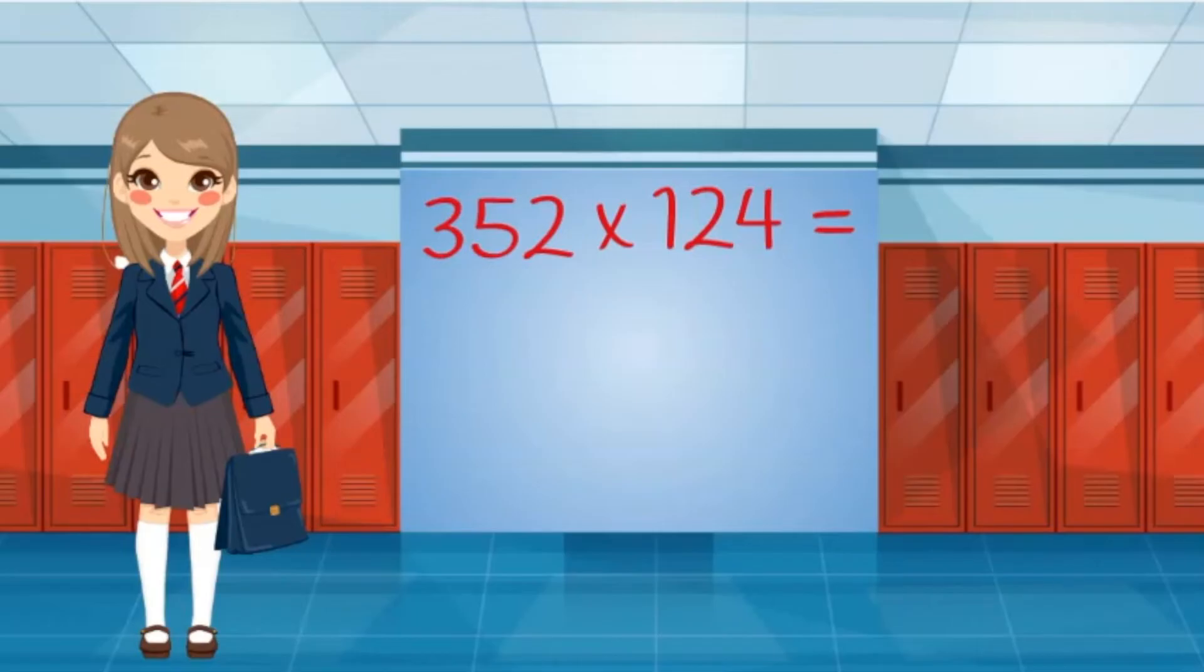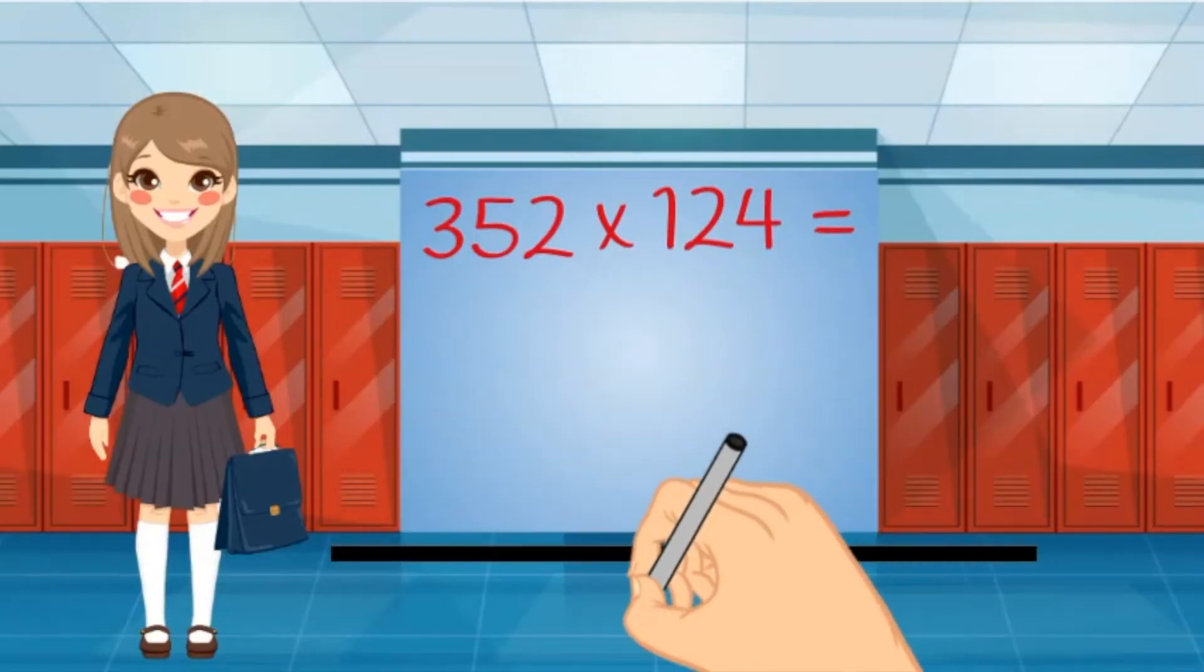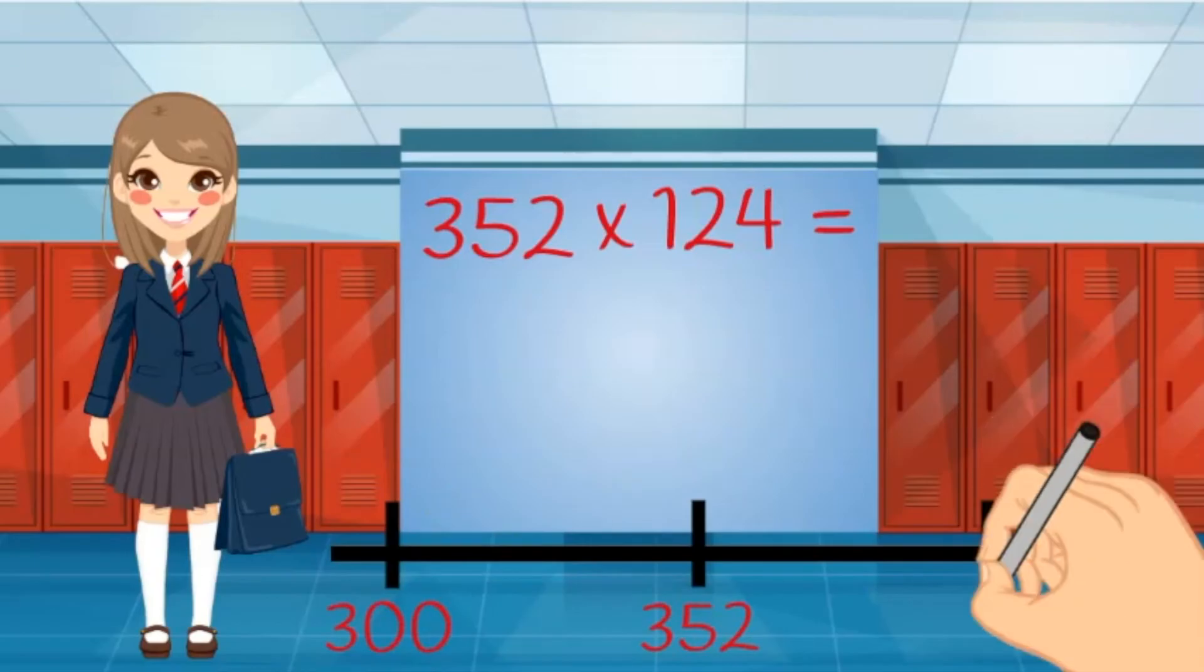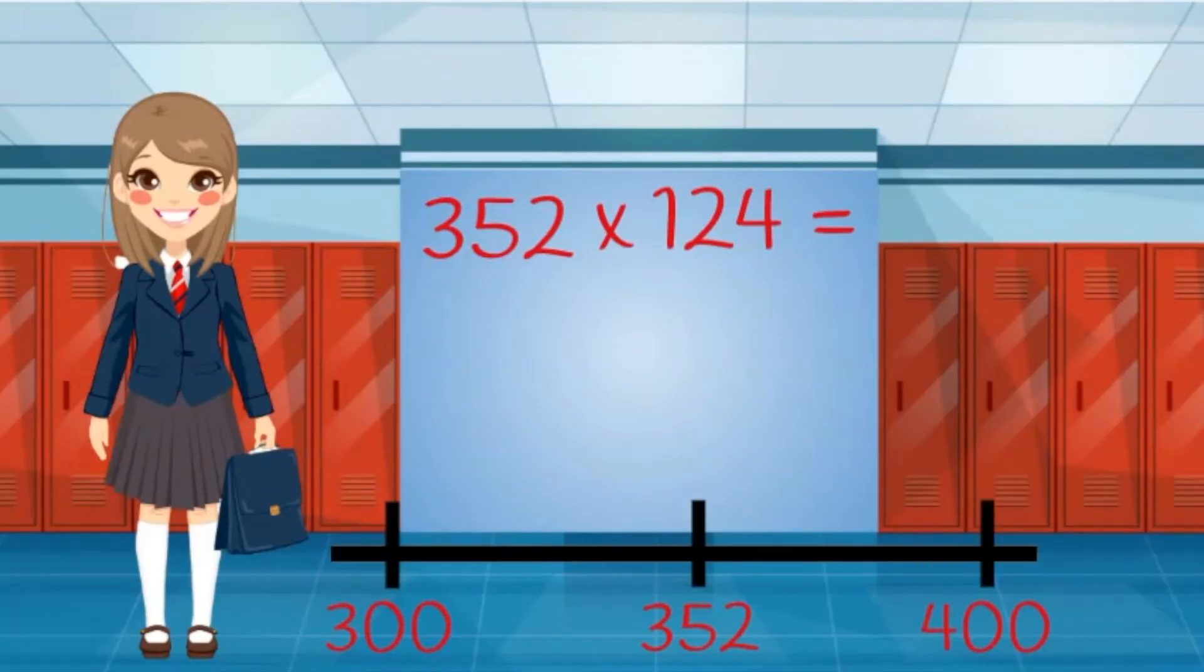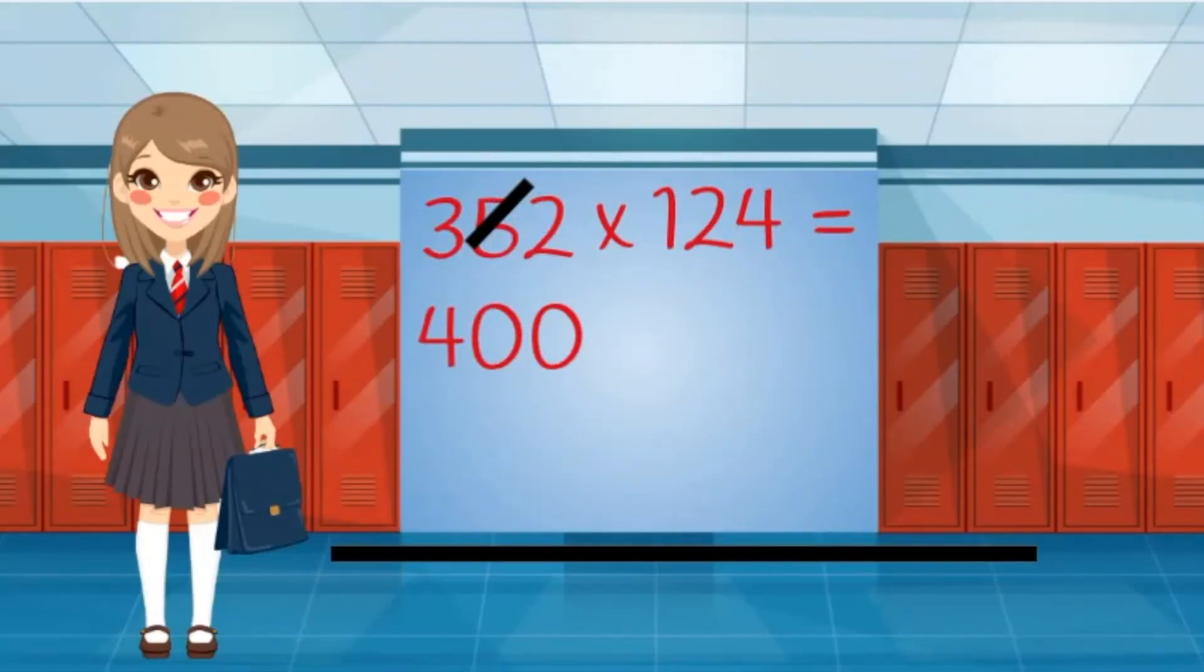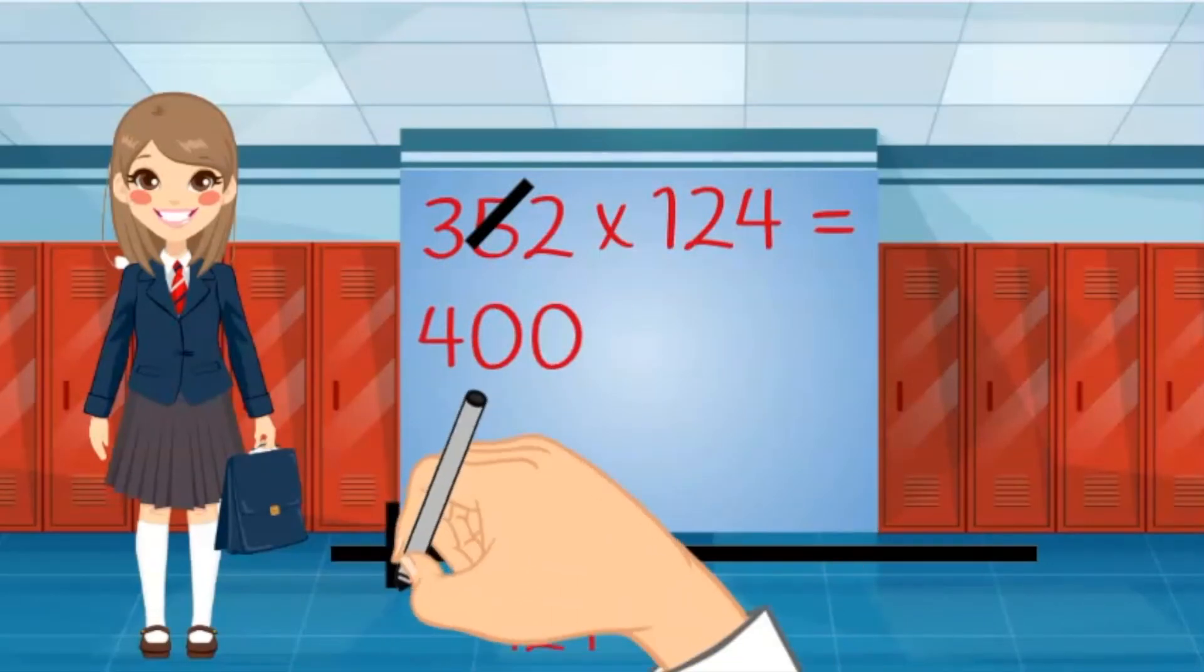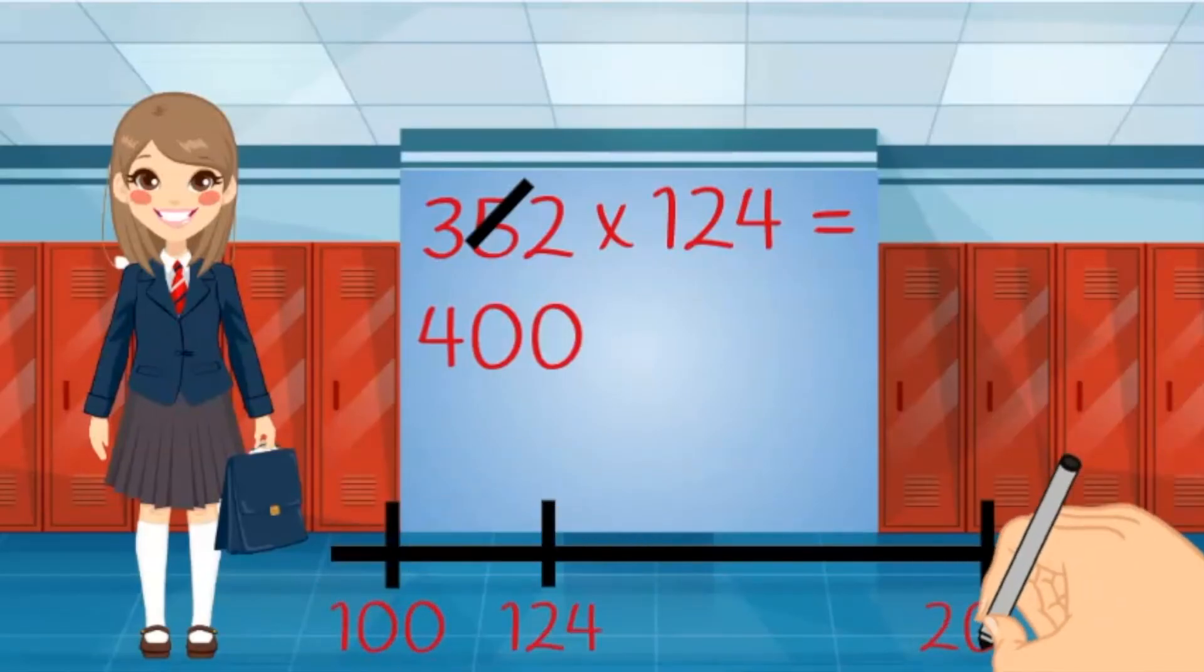352 is more than 300 but less than 400. It is closer to 400. Each person will take 124 pictures. 124 is more than 100 but less than 200. It is closer to 100.